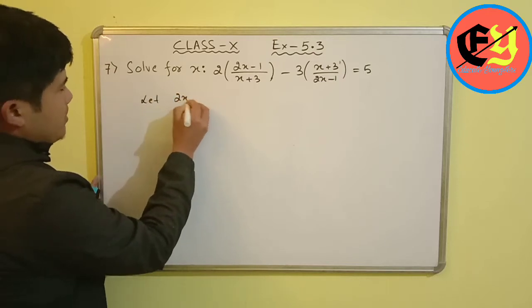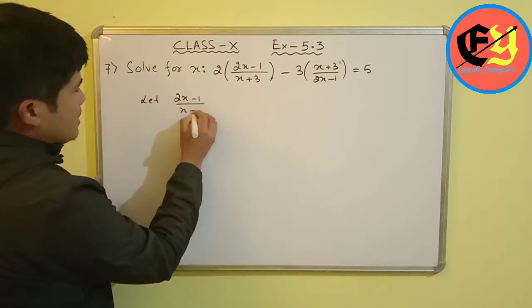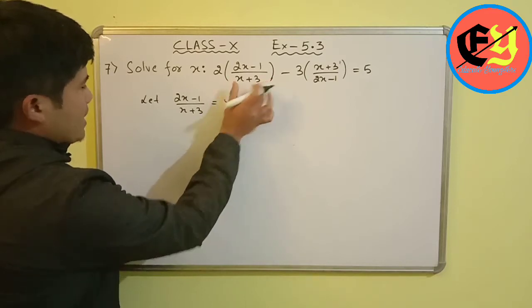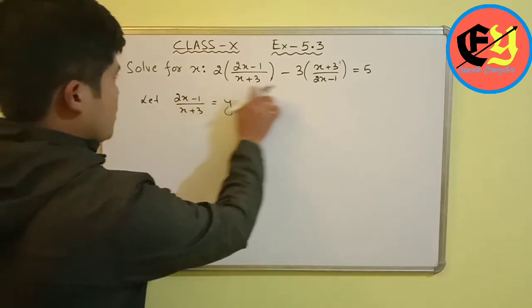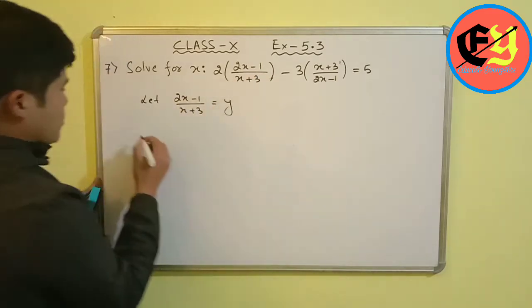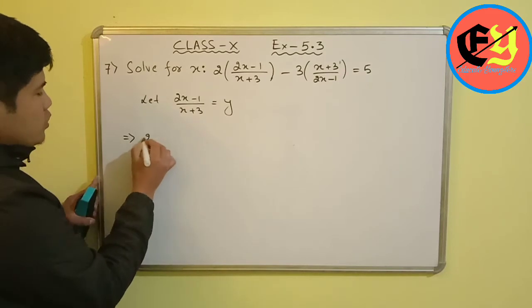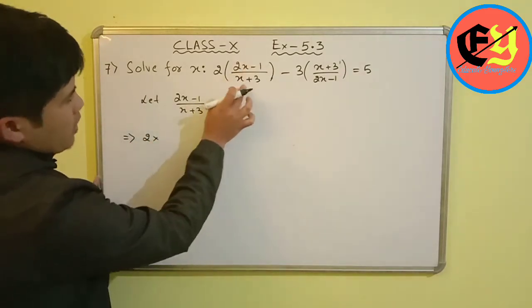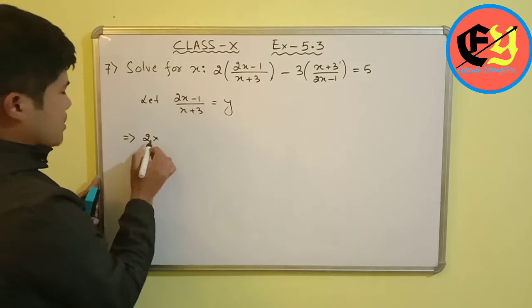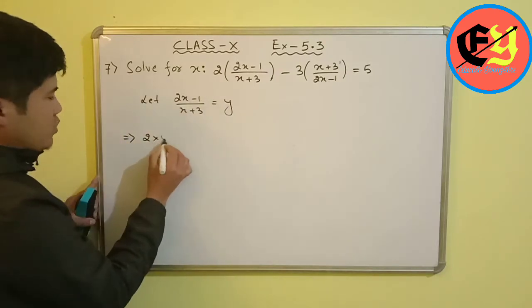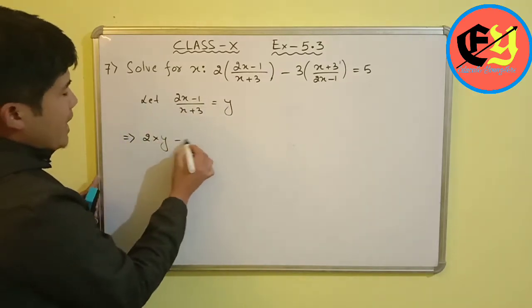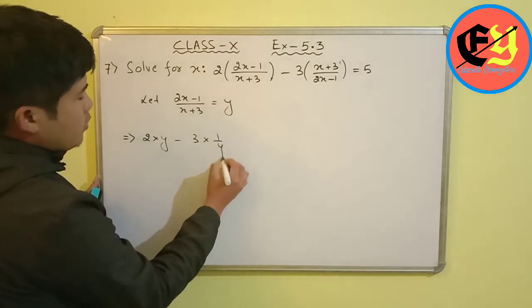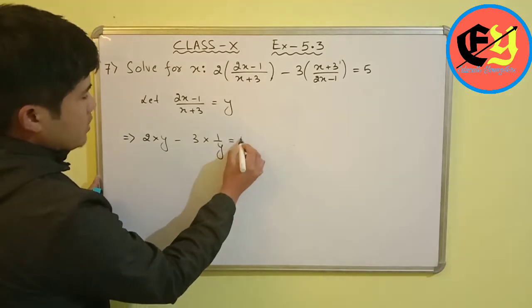Let y equal to (2x minus 1)/(x plus 3). Then 1/y equals (x plus 3)/(2x minus 1). The equation becomes: 2y minus 3 times (1/y) equals 5.